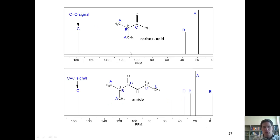Here are the answers to the next two examples. I hasten to point out once again, this carbonyl carbon is a carboxylic acid. Where does it show up? Between 160 and 180 ppm. Here is a carbonyl carbon to an amide. Where does it show up? Between 160 and 180 ppm.